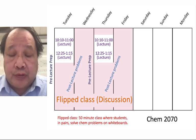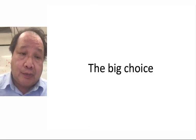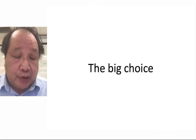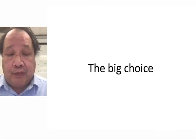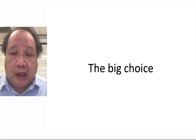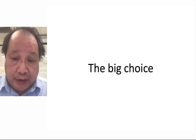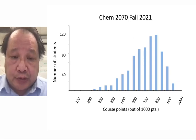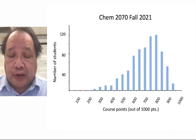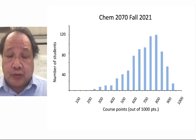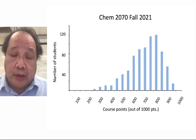We now come to what I actually think is the main part of the course, which I've called the Big Choice. Before I get into what the big choice is for the remaining three days, I'm about to show you some data — this is the grade distribution of students who took Chem 2070 last fall. The distribution is quite large, from very high scores to scores which are quite low.